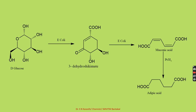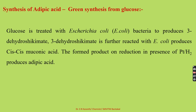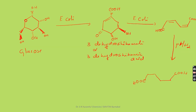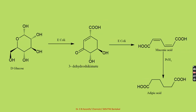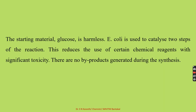Systematically: glucose treated with E. coli forms 3-hydroxy shikimate compound. The 3-hydroxy shikimate undergoes reaction with E. coli forming muconic acid. Muconic acid undergoes reduction to form adipic acid. This way, we obtain adipic acid, which is the main material to synthesize nylon 6-6 fiber. Thank you.